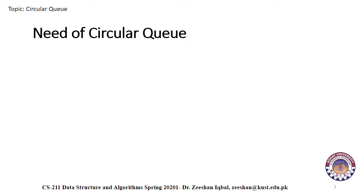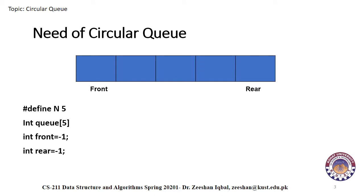In the last lectures on implementing queues using arrays, we discussed a major drawback of memory wastage using simple or linear queues. To overcome that drawback, the concept of Circular Queues was introduced. Let's discuss it again as a reminder. Suppose we have defined n=25, an integer array Q of size 25, and initialized two variables front and rear with minus one values.